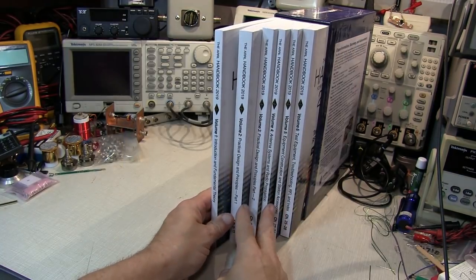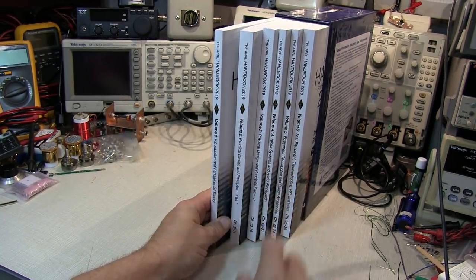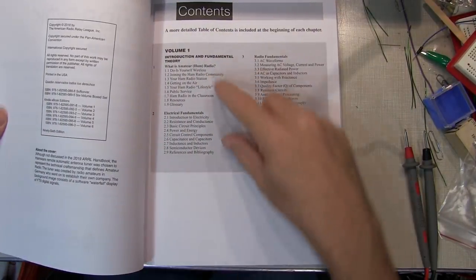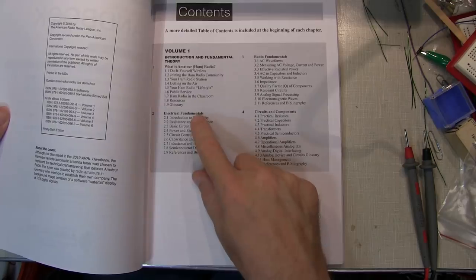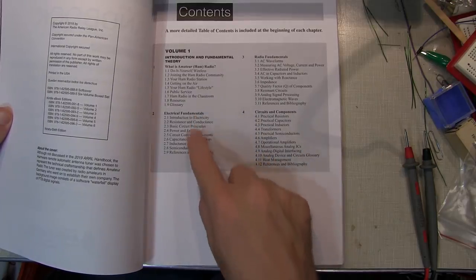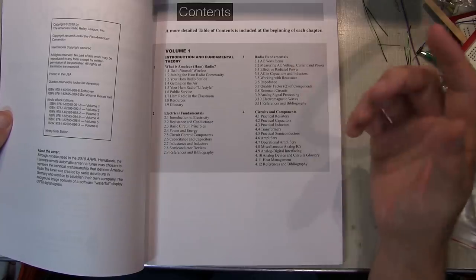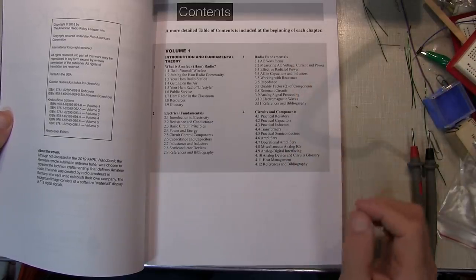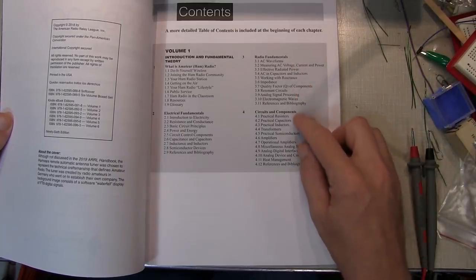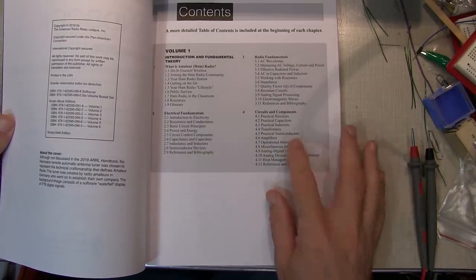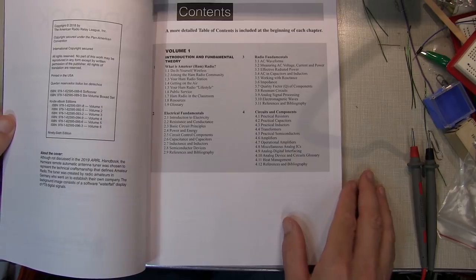So let's take a real brief look at the table of contents of each of the volumes. Volume 1 covers introduction and fundamental theory of what is amateur radio, electrical fundamentals including passives and semiconductor devices, radio fundamentals, AC waveforms, AC circuits, resonance, those types of topics, and then circuits and components, practical considerations for design with amplifiers, op-amps, A to D conversion, etc.